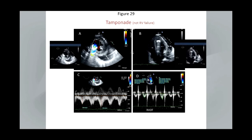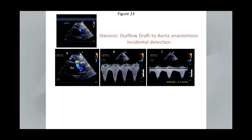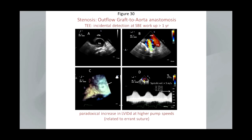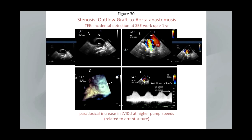This brings up the point of having a safety margin in patients where we're determining the minimum and maximum pump speed — you would like a bracket of safety in there. This is a patient with tamponade that was treated inappropriately for RV failure, which can have a similar appearance by other criteria, but when looking at the echocardiogram the right ventricle is small and there's a very large pericardial effusion. A case of outflow graft to aorta anastomosis stenosis was actually incidentally detected — this was a transesophageal echo in a patient with severe outflow graft to aorta stenosis detected incidentally at the time of an endocarditis workup a year after implant. The device had to be removed, and it was found that this kink was due to an errant suture present since initial implantation.